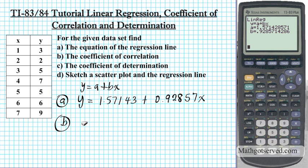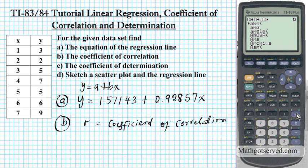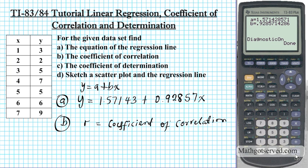Now for part B, we need to find the coefficient of correlation, which is known as R. To find this, we need to go to catalog and turn on diagnostic. The catalog is the second function option of zero. Press second function, zero to access the catalog menu, then scroll down to D — a quicker way is to just press the D key. Look for 'DiagnosticOn.' Diagnostic off conceals the coefficient of correlation and determination; diagnostic on reveals them. Press enter — DiagnosticOn — enter again — done.